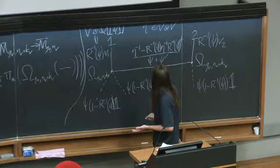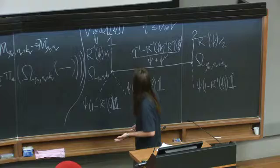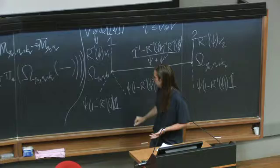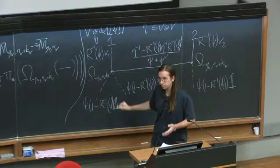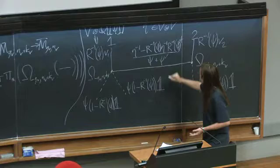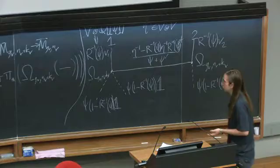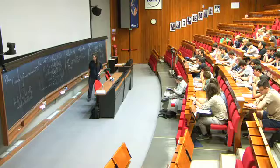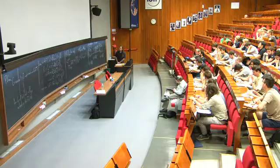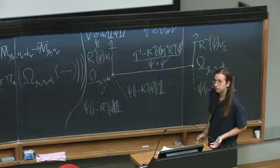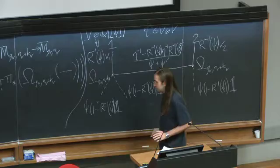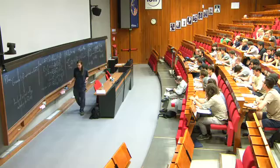If R is just the identity, this should be the trivial action. Indeed, R doesn't change V_1, so you just have V_1 applied there. The virtual leg contributions are zero, so you can assume K_v is zero everywhere. The edge also vanishes since you have eta^{−1} minus eta^{−1} in the numerator. So you're left with just a sum over the single graph with no edges corresponding to smooth curves — you get just omega_{g,n} evaluated at V_1 through V_N. So the action of the identity matrix is trivial.